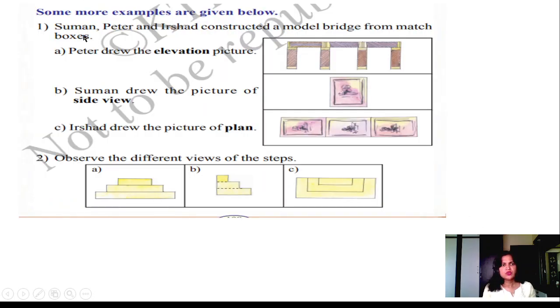Some more examples are given below. Suman, Peter, and Irshad constructed a model bridge from matchboxes. Peter drew the elevation picture. Suman drew the picture of the side view. Irshad drew the picture of the plan from the top view. Observe the different views of the top steps. On this angle it looks like this, and like this is the top view.